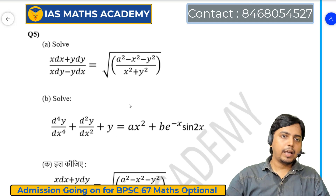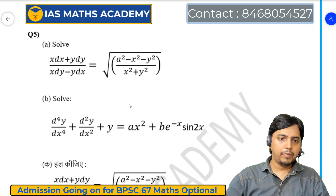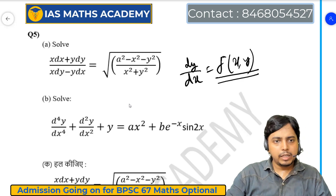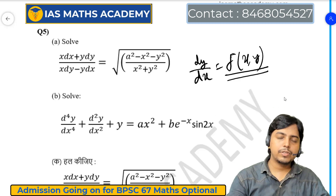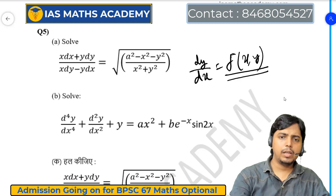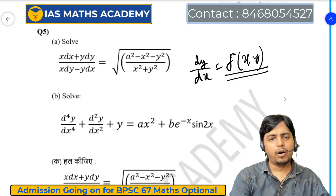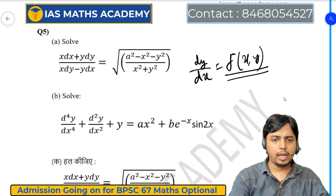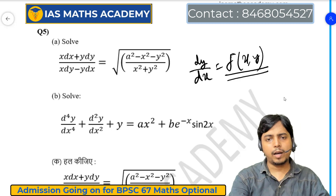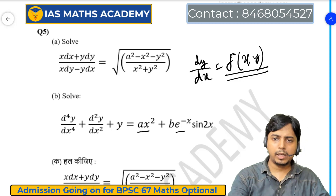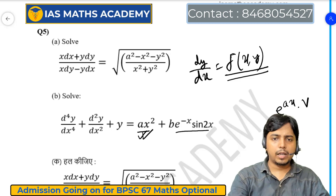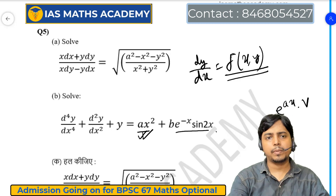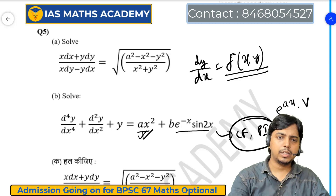Question number 5A में: solve this ODE — x dx + y dy + (a² - x²)/(a² + y²) (y dx - x dy) = 0 यह question दिखने में tough लग रहा है, लेकिन करोगे तो आराम से solve हो जाएगा। Question number 5B में एक 4th order non-homogeneous differential equation है जिसमें algebraic term और mixed term दोनों associated हैं। यहाँ e^(ax) into polynomial और x² type के terms हैं — Complementary Function (CF) और Particular Integral (PI) निकालकर add करो, वो final solution है। यह question 5A से भी easy है।